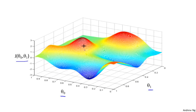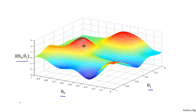Whatever value of theta_0, theta_1 gives you some point here. Now, I want you to imagine that this figure shows a hill — imagine this is like the landscape of some grassy park with two hills. And I want you to imagine that you are physically standing at that point on the hill, on this little red hill in your park. In gradient descent, what we're going to do is spin 360 degrees around, look all around, and ask: if I were to take a little baby step in some direction and I want to go downhill as quickly as possible, what direction do I take that little baby step in? It turns out that if you're standing at that point on the hill and you look all around, you find that the best direction to take a little step downhill is roughly that direction.